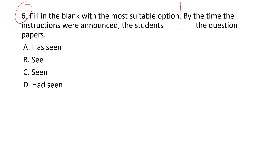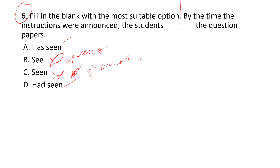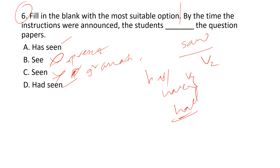The sixth question: 'By the time the instructions were announced, the students blank the question papers.' Option 'see' is wrong because the sentence is in past tense, not present. 'Seen' alone is grammatically incorrect — you need an auxiliary verb: has/have for present perfect, had for past perfect. Since the sentence is in past tense, we need past perfect: 'had seen.' Option A — 'had seen' — is the correct answer.